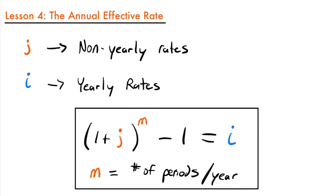Sometimes when we have an account with a rate that isn't yearly, we are still interested in knowing what our annual rate is over a one-year period. That's the main focus of this lesson — to find what we call the annual effective rate, which is essentially just an annual interest rate that we've been using all along.